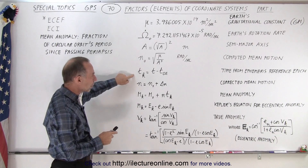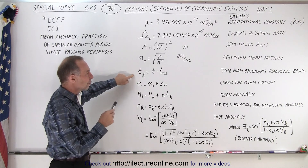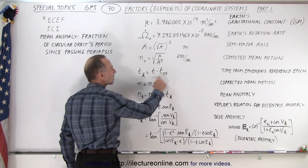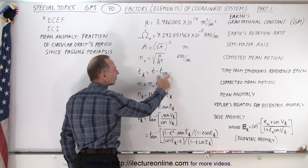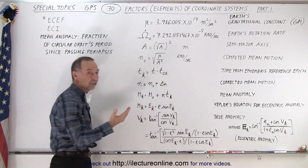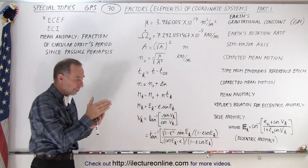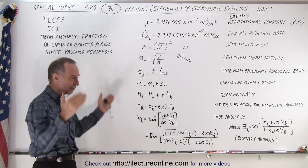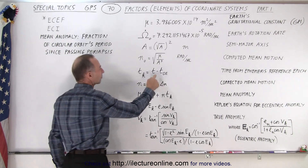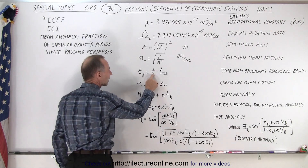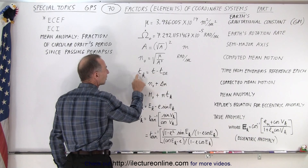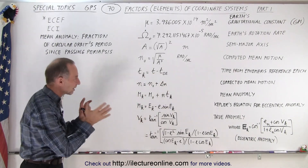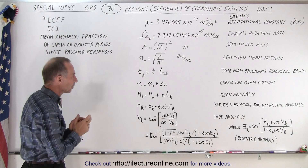Then we have what we call the time from ephemeris reference epoch. This time is the time of the ephemeris — the middle point of the period of the ephemeris data. We subtract that from the satellite time and get t sub k. We want to make sure we understand the difference between those two.